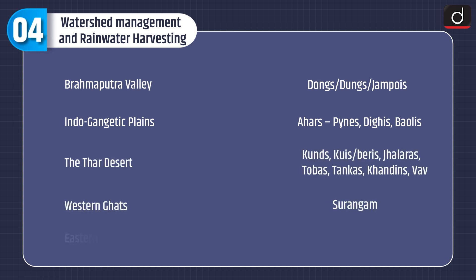In the Indo-Gangetic Plains, the systems are called Ahars, Pynes, Dighis and Baulis. In the Thar Desert, systems include Kuis or Berries, Jhalaras, Tobas, Tankas, Khadins and Vav system. In the Western Ghats, the Surangam system is used. And in the Eastern Coastal Plains, the Aeri or Oorani system is practiced.